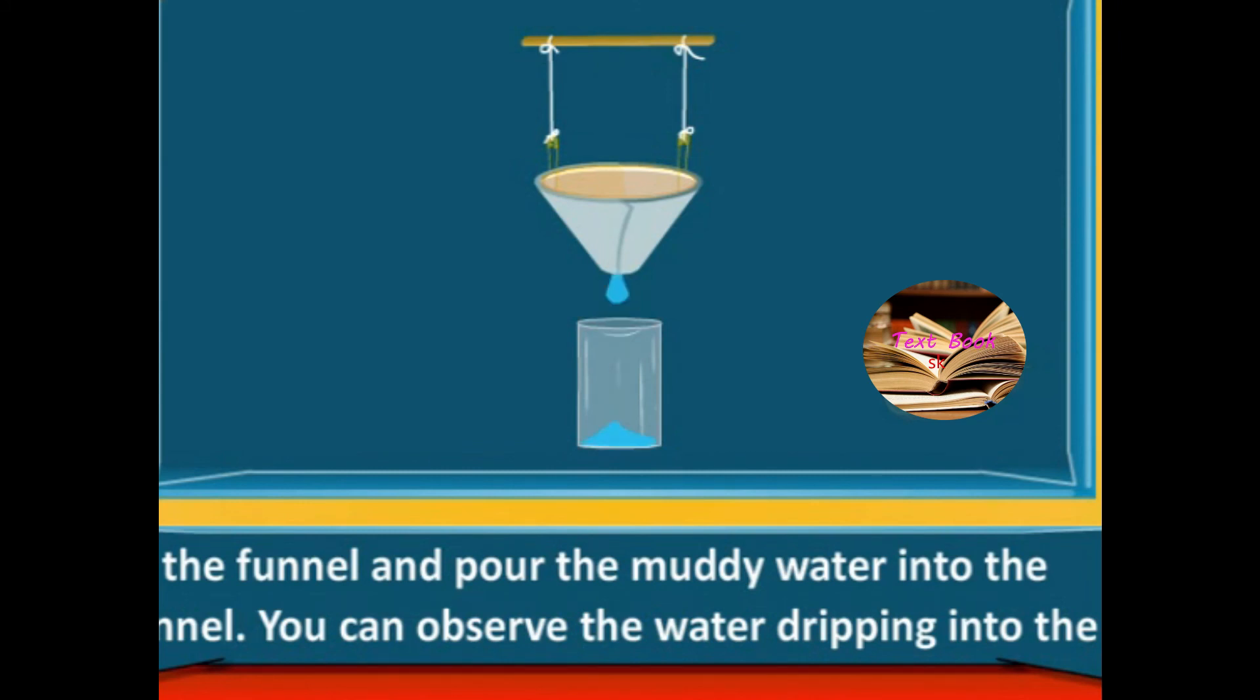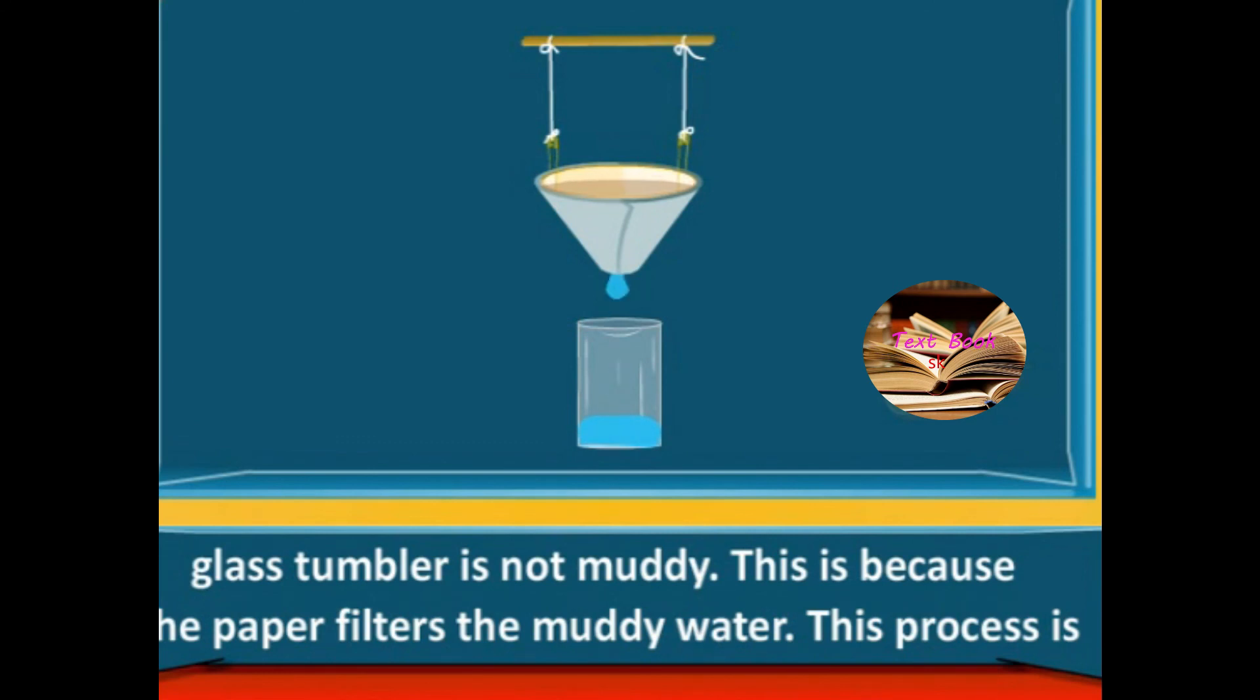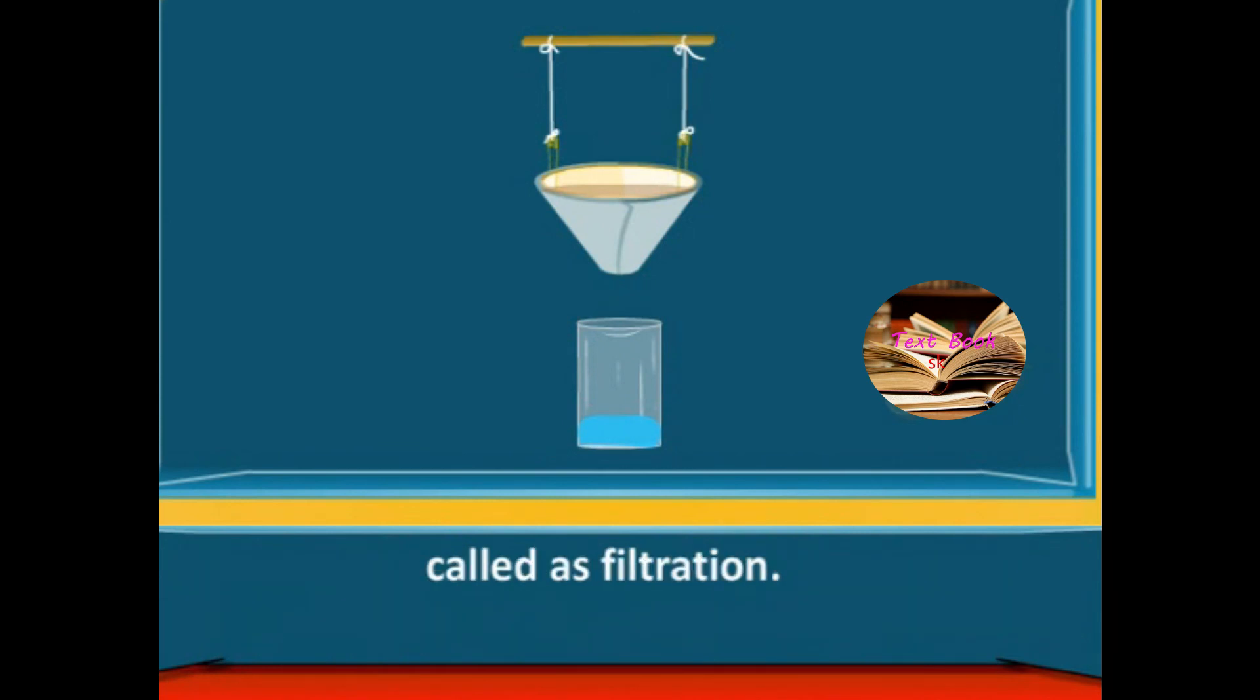You can observe the water dripping into the glass tumbler is not muddy. This is because the paper filters the muddy water. This process is called filtration.